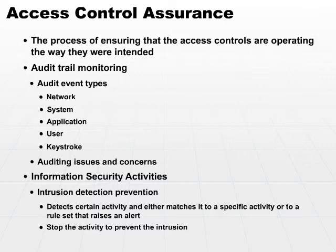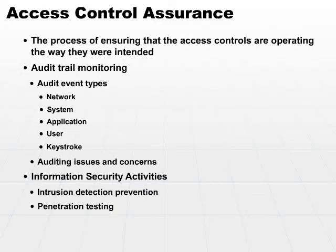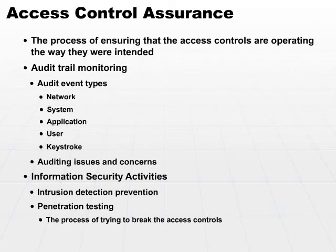Once you have your access controls in place, it's important to identify what you have in place, identify the goal for each control, and then test to make sure that your controls actually do their job. That's where penetration testing comes in. Sometimes called pen testing, it's the process of trying to break your access controls. You can have a penetration test that's based on no knowledge — you pretend you know nothing about the system, or you get someone who really knows nothing about your system to attack it. Or you can have limited knowledge, or perhaps you, knowing the internals and all the details of your access controls, use that knowledge to try to break through and actually compromise your own security.